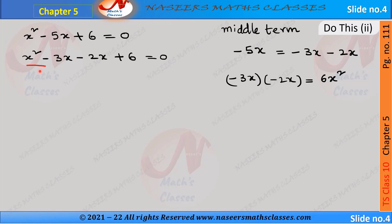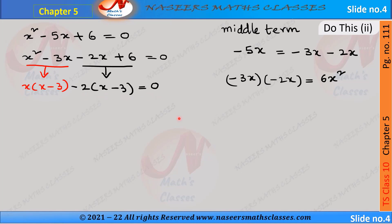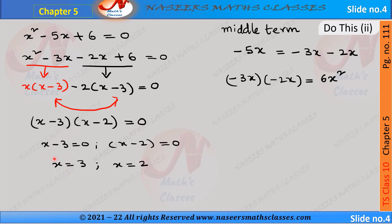So the equation is written as x² - 3x - 2x + 6 = 0. In the first two terms, x is common, giving x(x - 3). In the next two terms, -2 is common, giving -2(x - 3). So we have x(x - 3) - 2(x - 3) = 0. Here x - 3 is common, so we take it out and the remaining is x - 2.